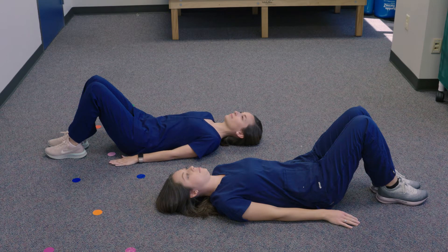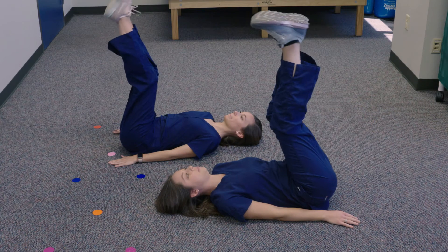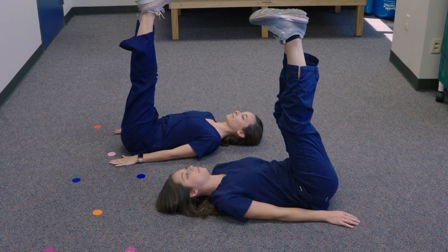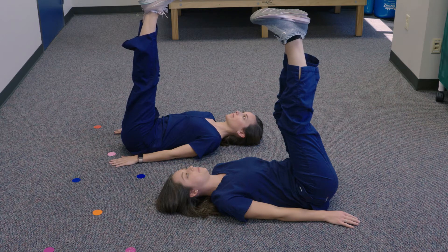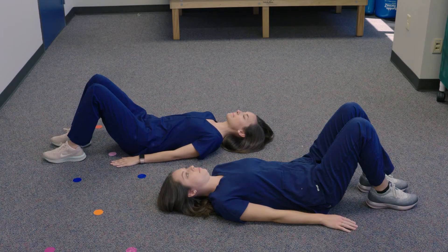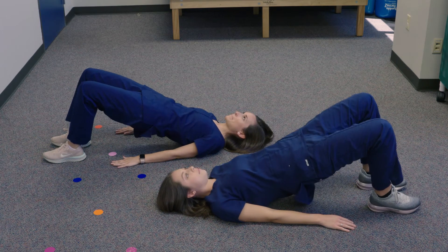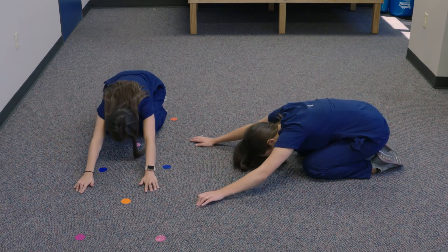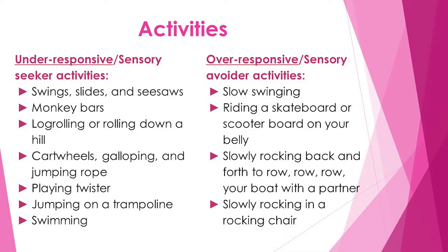The first pose you can try is called legs up the wall. You can do this with or without a wall — have your kid lay on their back with their legs suspended in the air. The second pose is the bridge pose: start on the ground and then push up into a bridge. The third pose is child's pose. Here are some more activities you can try at home if your child is under- or over-responsive to vestibular input.